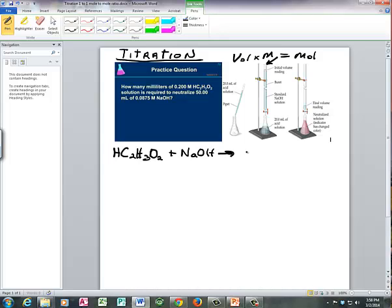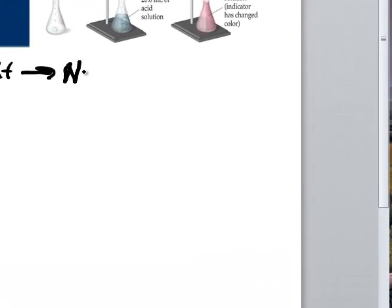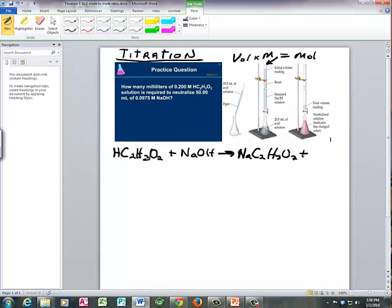And that's going to produce two products. Our salt that it produces will be sodium acetate, NaC2H3O2. And of course, since this is an acid-base neutralization reaction, our other product will be water.